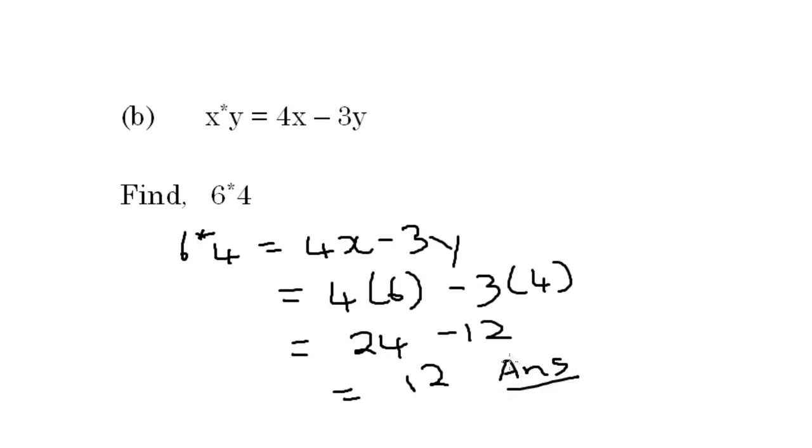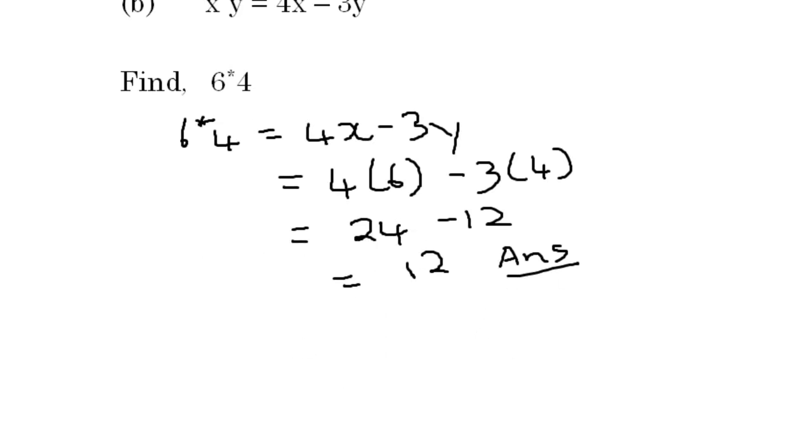It's simple. What we do is 6 asterisk 4 is telling us that we're supposed to substitute 6 for x and 4 for y in the equation 4x minus 3y. And our answer is 12. Let's go on to the next question.